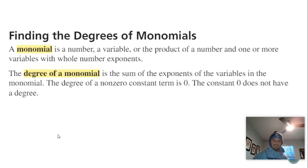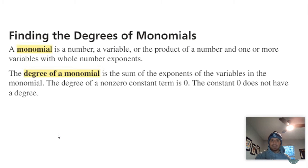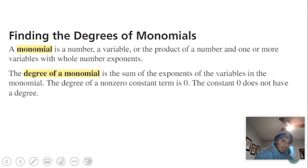First thing is about finding the degrees of monomials. A monomial is a number, a variable, or the product of a number and one or more variables with whole number exponents. The key thing here is the degree of a monomial is the sum of the exponents of the variables. The degree of a non-zero constant term is zero, and the constant zero does not have a degree.